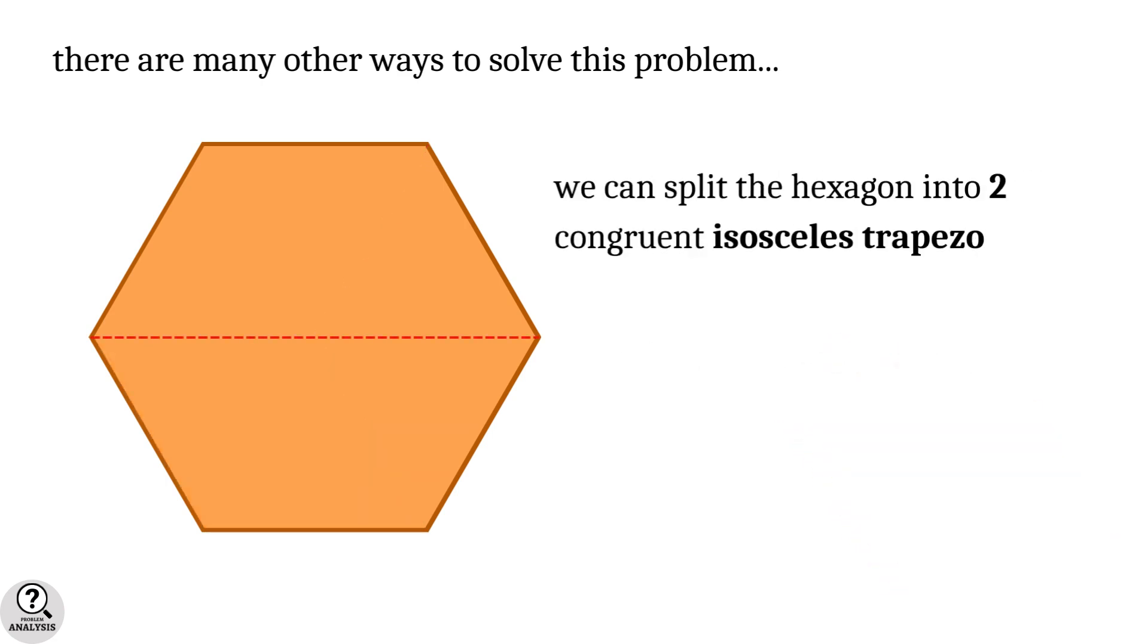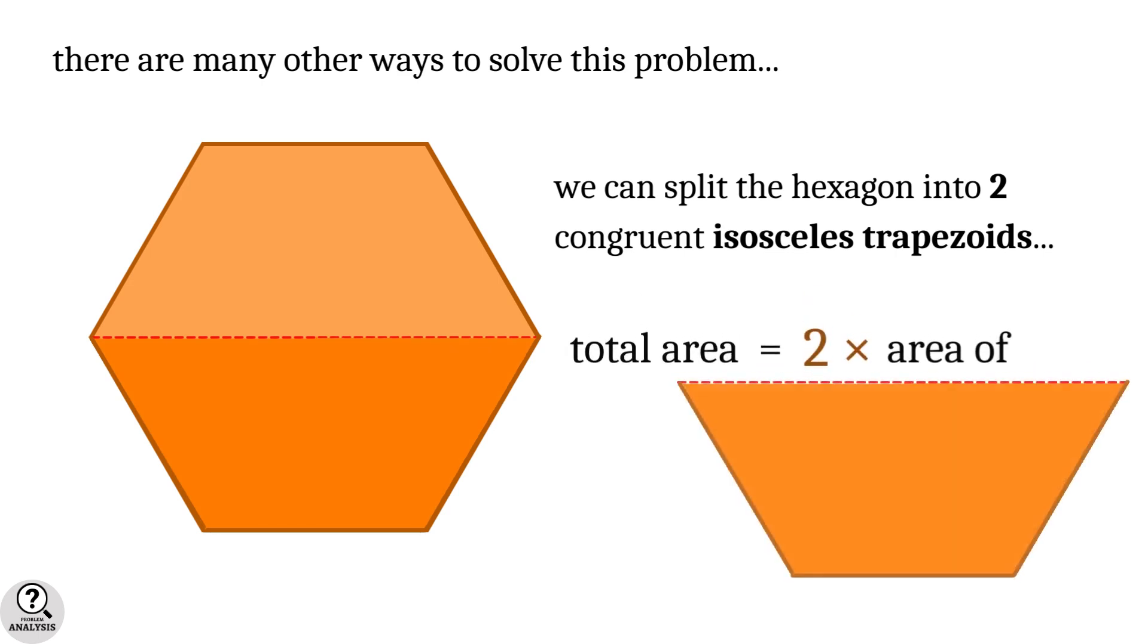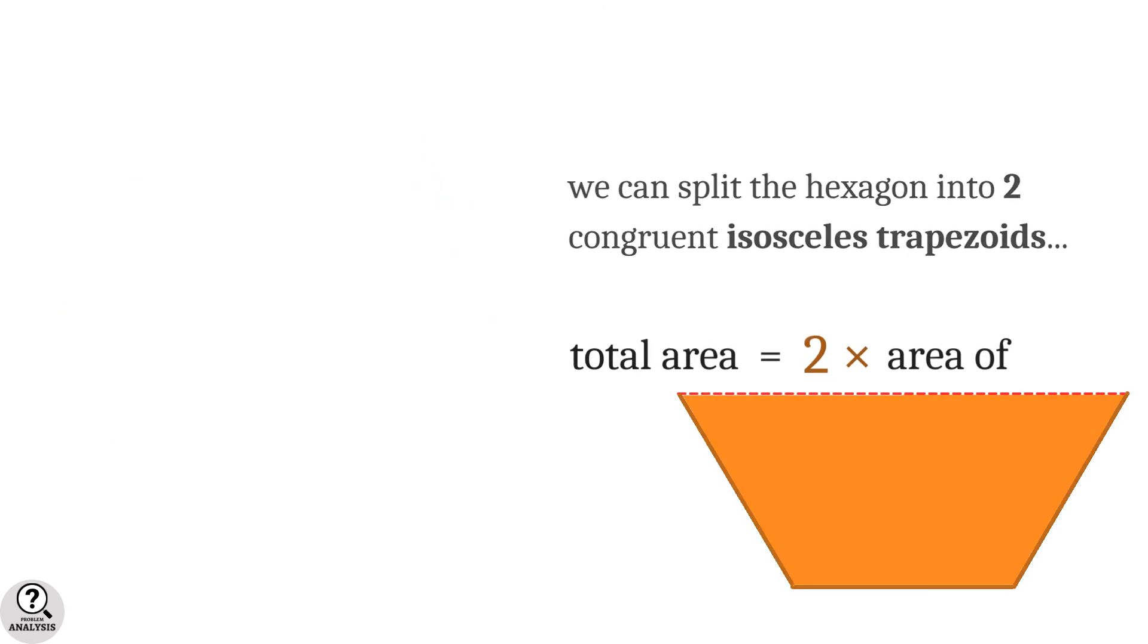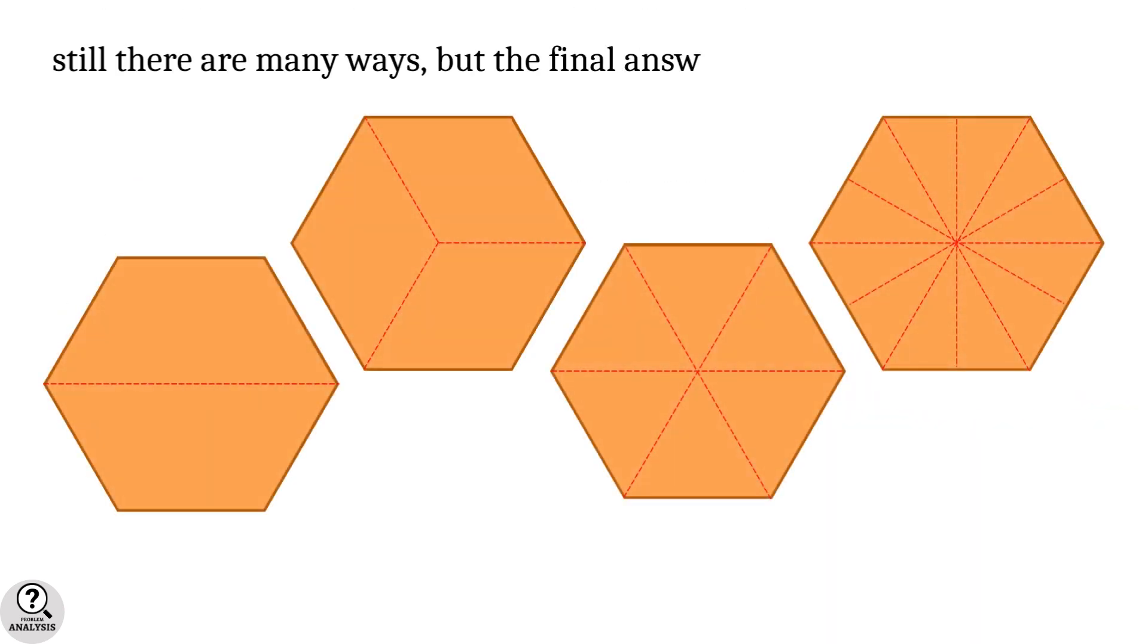Also, we can split the hexagon into 2 congruent isosceles trapezoids, so the total area will be 2 times the area of one such trapezoid. Still, there are many other ways, but the final answer is unique, which is equal to 18√3 square units.